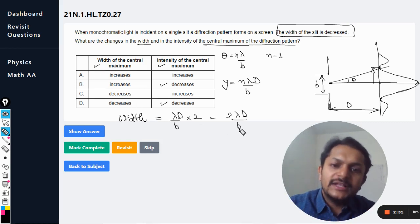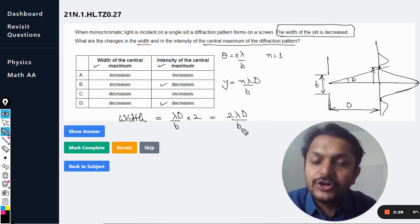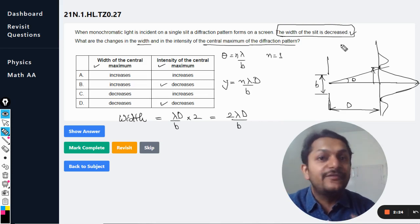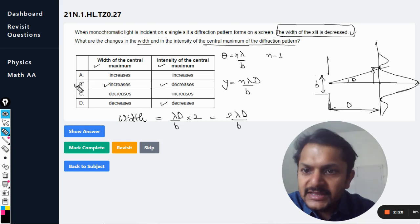Next is the width of the central maxima. As you can see that b is in the denominator, so if b reduces as per the question, it decreases, obviously the width is going to increase. And hence b will be the correct answer.